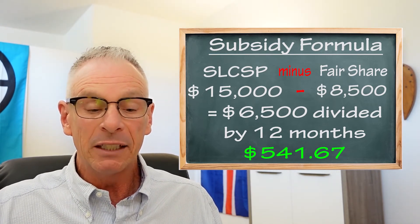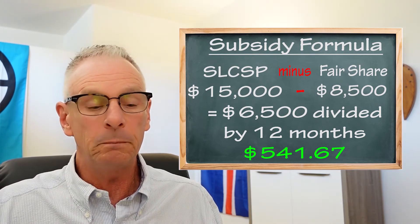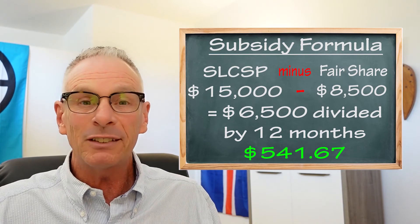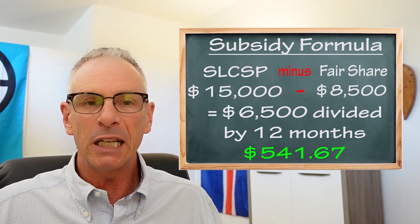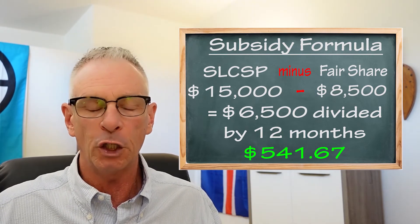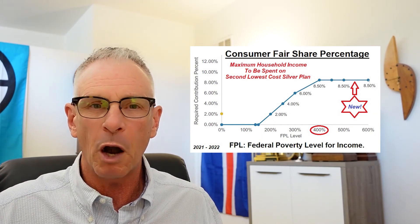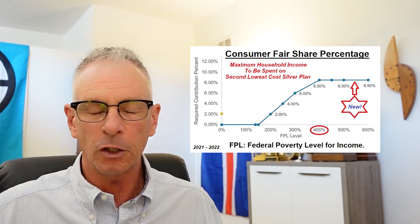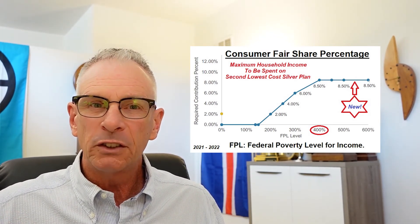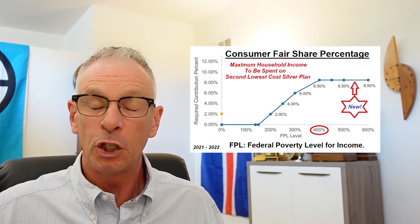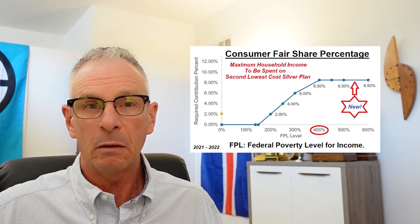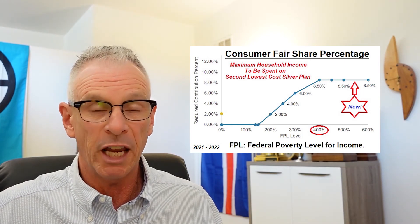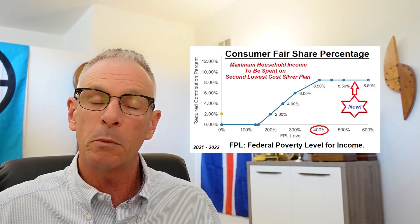The $8,500 represents the consumer fair share, and the way the Affordable Care Act is set up is to subsidize the remainder. So depending on where you fall on that consumer fair share curve, that's what the subsidy is going to be filling in — so you have to pay no more than your fair share. With the American Rescue Plan, there's no longer a 400% federal poverty level cliff. You can make $200,000, and if the second lowest cost silver plan is 10% of your household income, you're still going to get a subsidy — it will be the difference between the 8.5% and the 10%. If the second lowest cost silver plan is 7% of your household income and your fair share is 8.5%, there is no subsidy because it's already determined to be affordable.